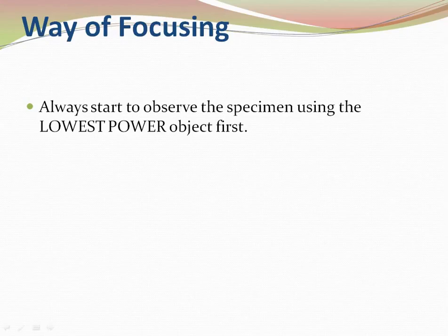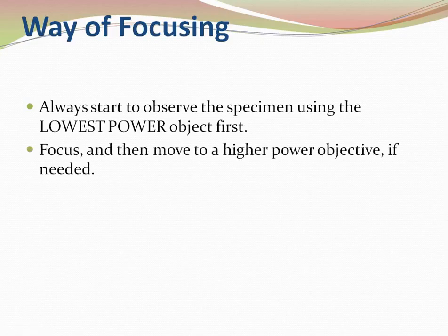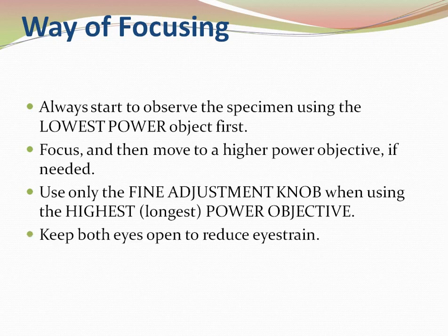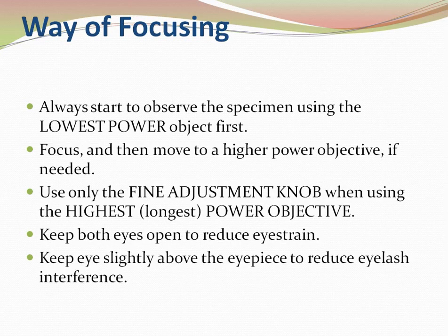How to focus the specimen: always start by observing the specimen using the lowest power objective first, then focus it, and then move to a higher power objective according to your need. Use only the fine adjustment knob when using the highest power objective. Keep both eyes open with a binocular microscope to reduce eye strain. Keep eyes a little bit away from the eyepiece to reduce eyelash interference in the field of vision.